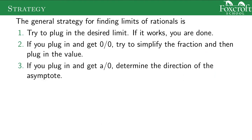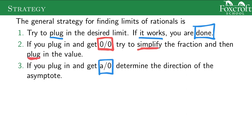Here's the strategy for finding limits of rational functions — three steps. First, just try plugging in the number. If nothing weird happens and you don't divide by zero, you're done. If you get 0 over 0, that's a clue something can cancel in the fraction, so simplify and then plug in. If you get any nonzero number over 0 — like 1 over 0 or 10 over 0 — that gives you an asymptote, and you need to figure out if it's positive infinity or negative infinity.